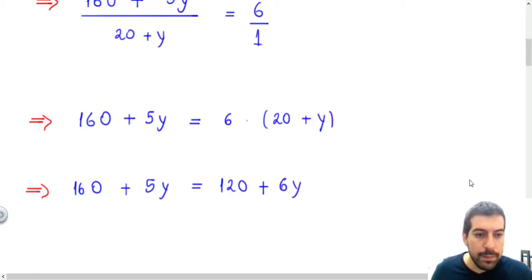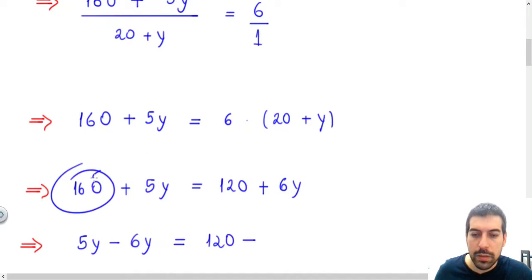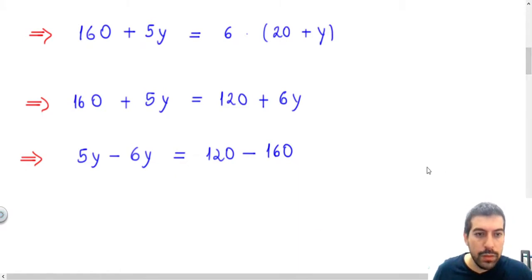Finally, I will leave this 5Y here, and I will bring this 6Y to the left side, so I need to change the sign. It was a plus, it will be a minus here. And in the right side, I have 120 minus this 160 that goes to the right side. So in the end, we will have that 5Y minus 6Y will be minus Y, being equal to 120 minus 160, which is minus 40.